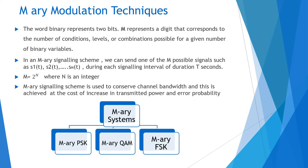M is equal to 2 raised to N, where N is an integer. The M-Array signaling scheme is used to conserve channel bandwidth, and this is achieved at the cost of increasing transmitted power and error probability.